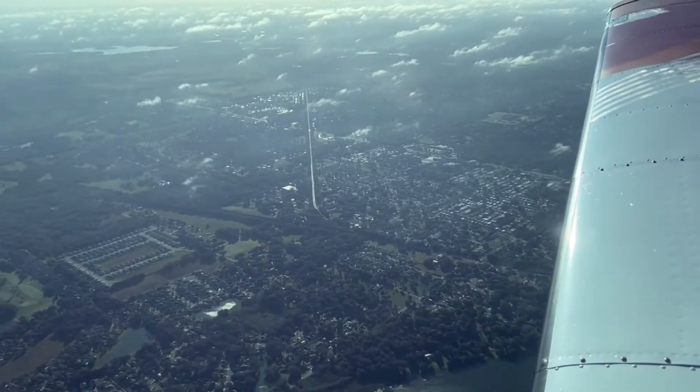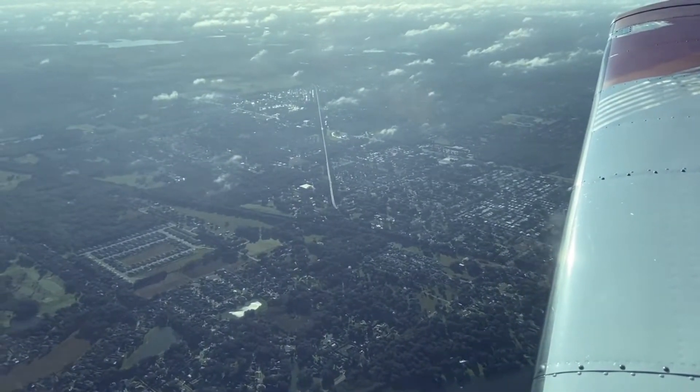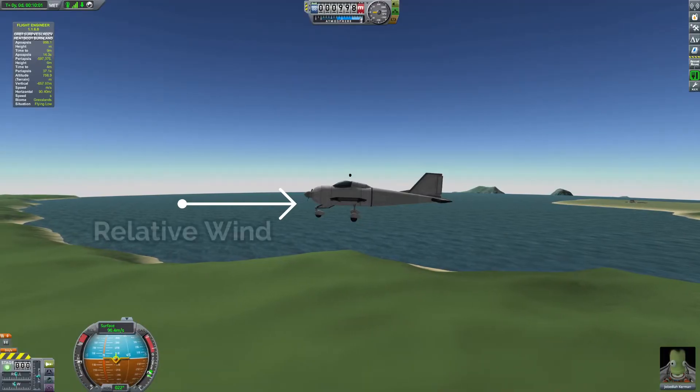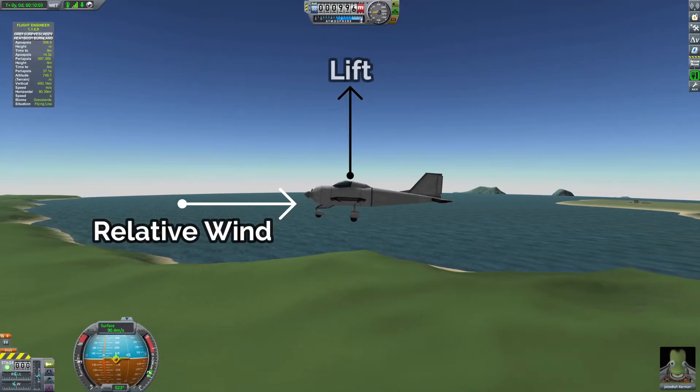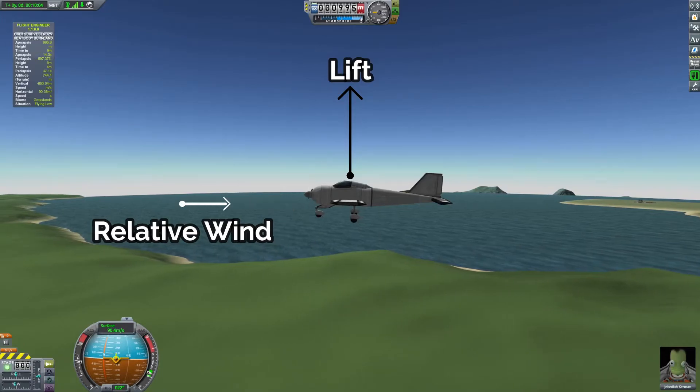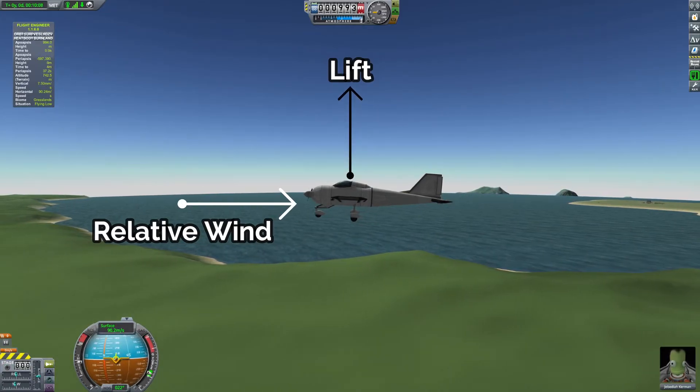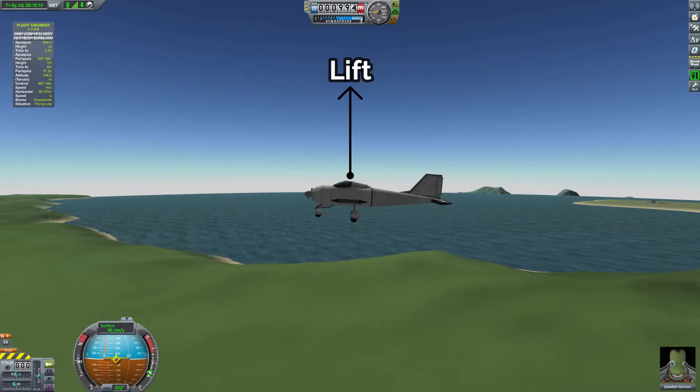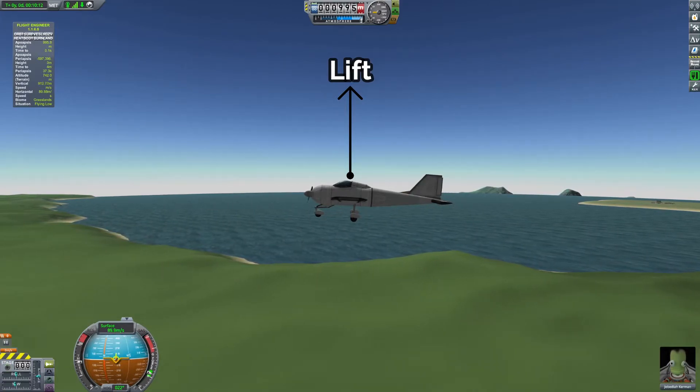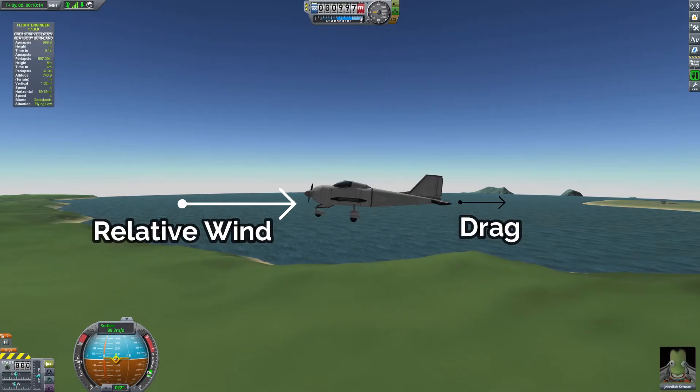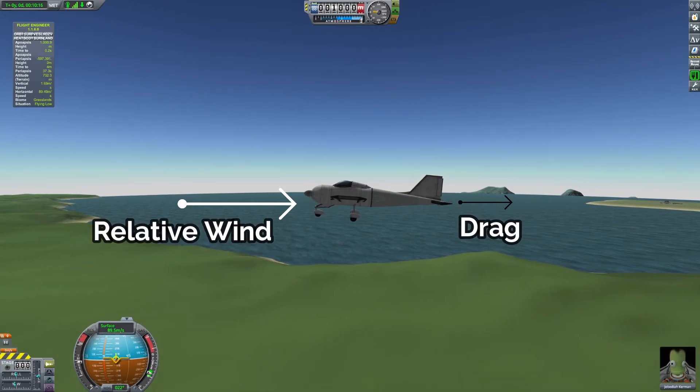Yes, lift is created by the wings and drag slows the plane down, but more specifically, lift is a force that acts at a 90 degree angle to the relative wind, in other words, the air passing around the aircraft. To put that differently, any force that pulls the aircraft up relative to its direction of travel is lift. Drag, however, is aligned with the flight path, but acts in the opposite direction and pulls the aircraft back.